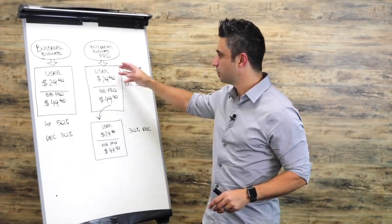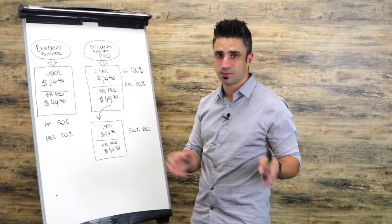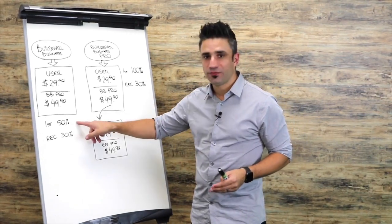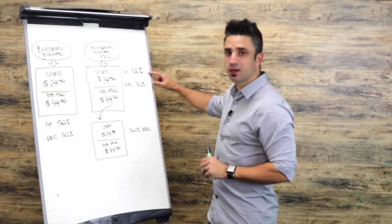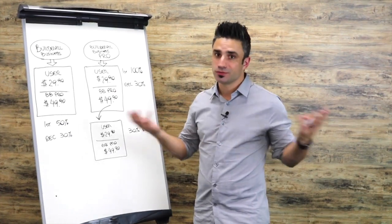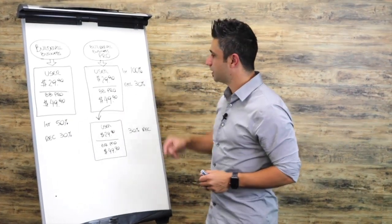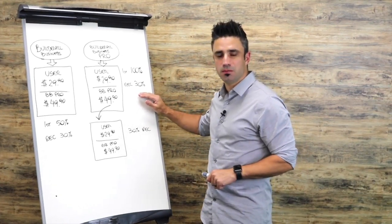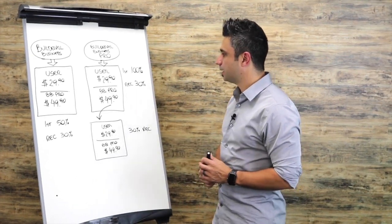You're going to promote either one of these plans — the $29.90 for users or $49.90 as a Business Builder Pro. The cool thing is that instead of earning 50% commissions on the first month, you start earning 100% commissions. So anytime you make a sale on either one of these plans, you basically get your money back. If you sell the $49.90, you get 100% commissions coming directly to you. After that, you earn 30% commissions recurring every time they renew their subscription.